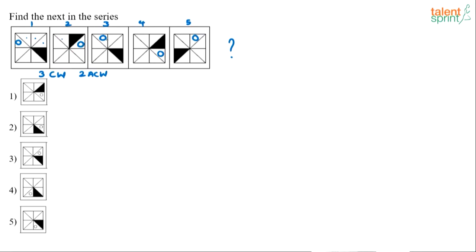Again from 3 to 4 if you observe, it moved 3 positions clockwise — 1, 2, 3 — it came into this section. So 3 positions clockwise. From 4 to 5, it moved 2 positions anti-clockwise — 1 and 2 — it came into this section. So from 5 to 6 it should move 3 positions clockwise.